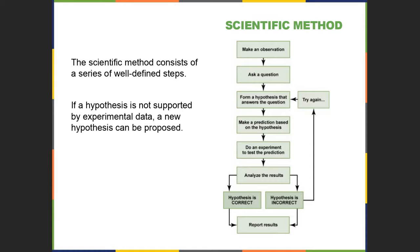Even in science, even bad data — when an experiment doesn't work — informs the body of scientists working in that particular discipline or on that particular problem. It allows them to not conduct the same experiments or to have a different idea about how that experiment should be run. Either way, it informs the body of scientists doing that work, so we're better off for understanding a little bit more.